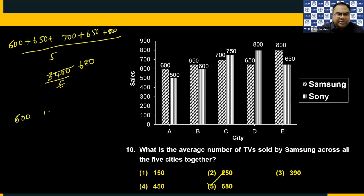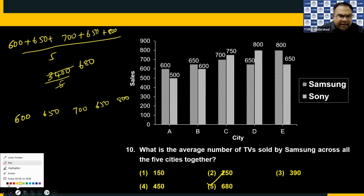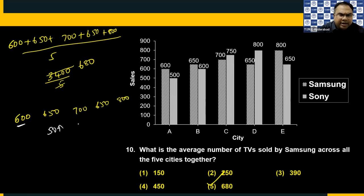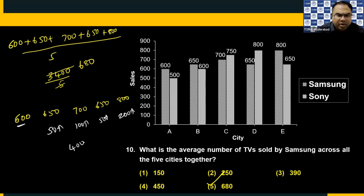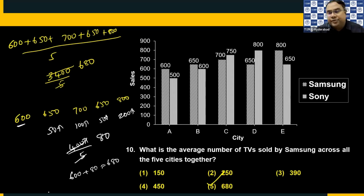An alternative shortcut: assume average to be 600. Then deviations are 0, +50, +100, +50, +200. Total extra is 400. Divide 400 by 5 = 80. So average is 600 plus 80 = 680. Choice five confirmed.